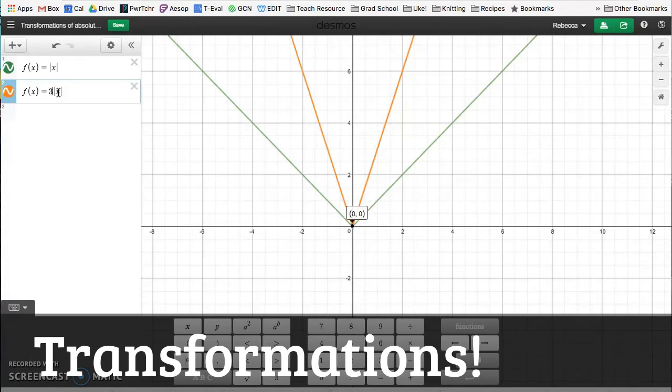What happened is I took all the y values of the function, so let's say I called this g, I should call this g. If I took all the original function of f, and if I multiply the outside by three, it's going to take all the y values, all the f of x values, and triple them. So that's why it's so skinny.